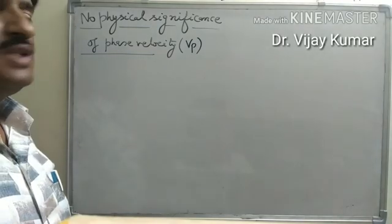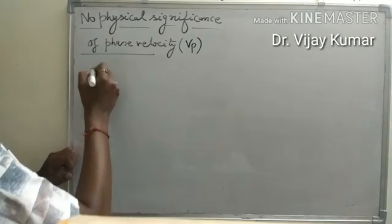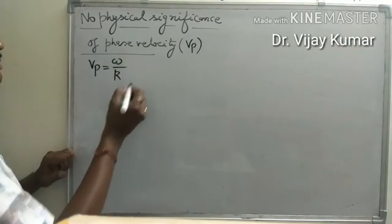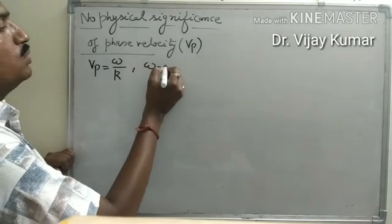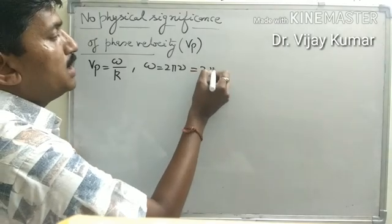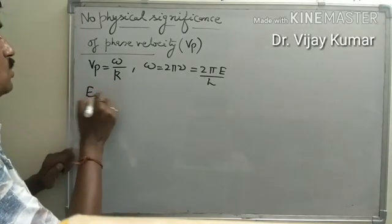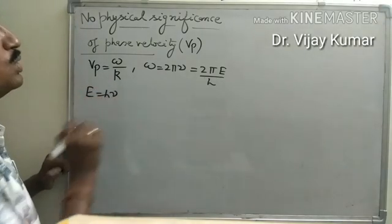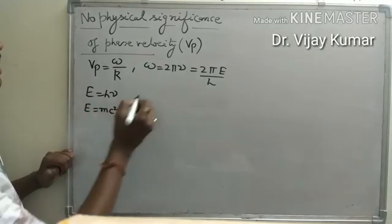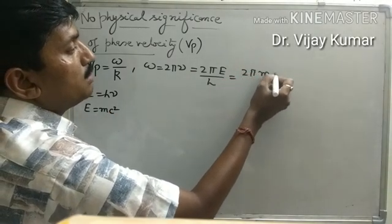Now we discuss why phase velocity has no physical significance. We know that phase velocity equals the ratio of angular frequency and wave number, and omega equals 2π times nu. We can write 2π nu as E upon H, since E equals H times nu. As per the energy-mass relation, E equals mc squared, so we can write it as 2π mc squared upon H.